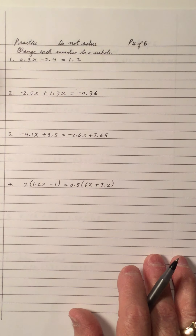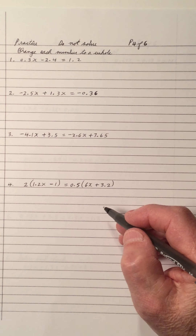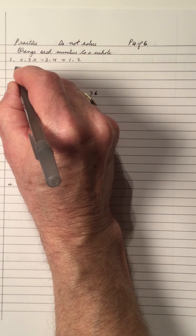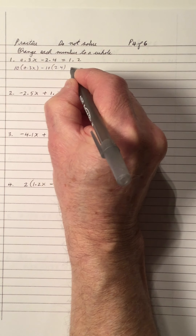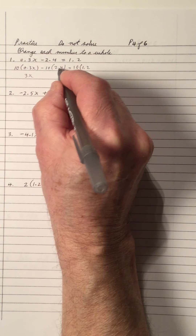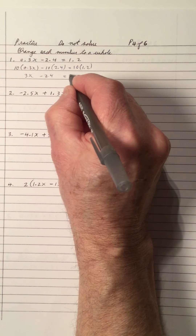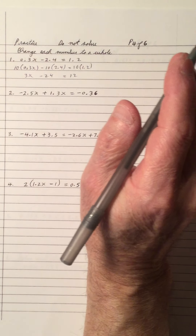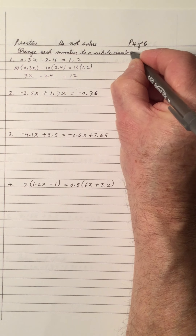So let's continue. Without solving, pause the video and see if you can multiply these by the correct number — but don't have to solve them. Right here I've got one decimal place, one decimal place, one decimal place. So I'm multiplying every part of the equation by 10. So multiplying by 10: 10 times 0.3 is 3x, 10 times 2.4 is 24, 10 times 1.2 is 12. We just want to change each number to a whole number.